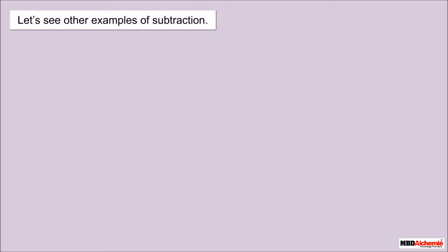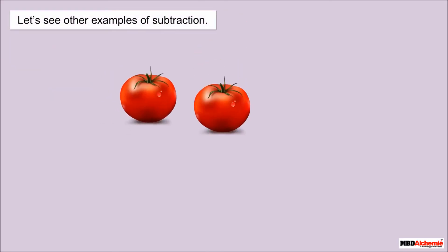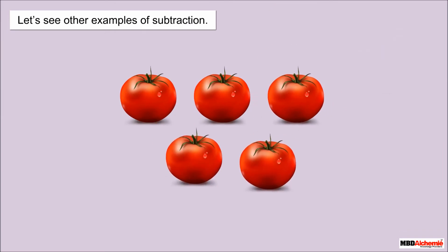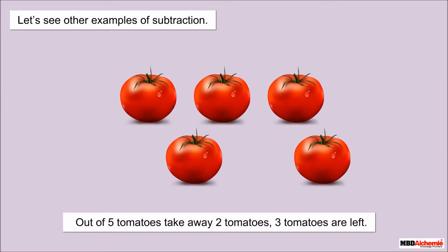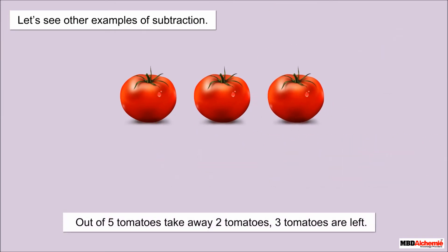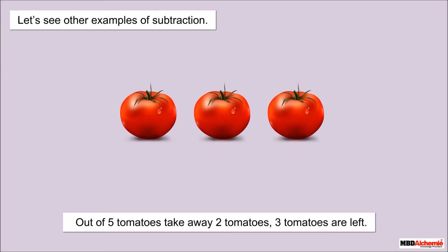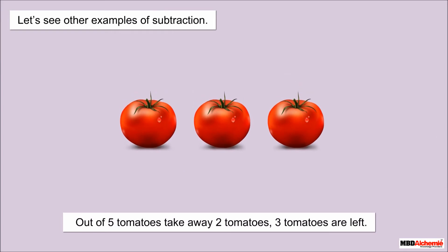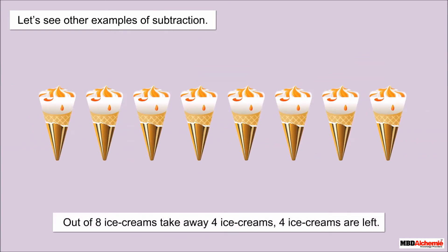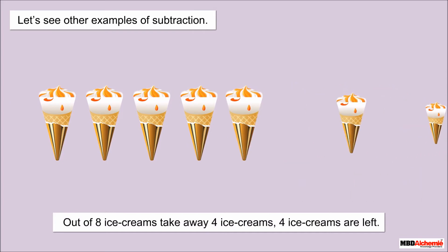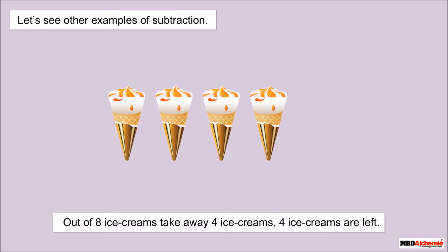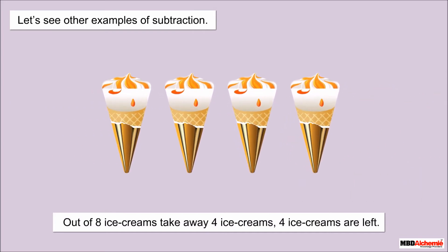Let's see other examples of subtraction. Out of five tomatoes, take away two tomatoes — three tomatoes are left. Out of eight ice creams, take away four ice creams — four ice creams are left.